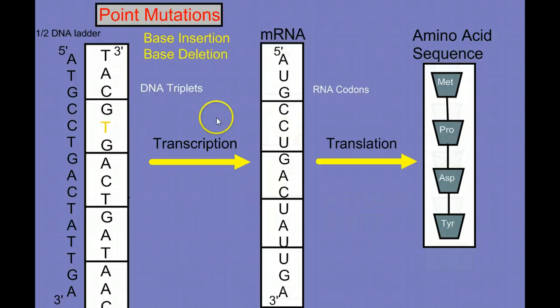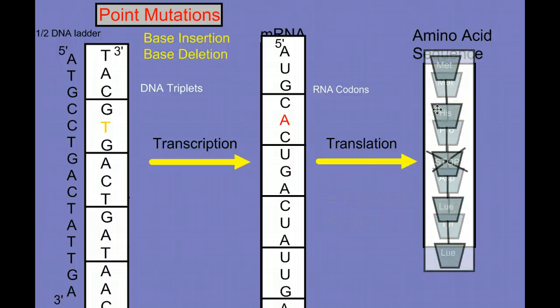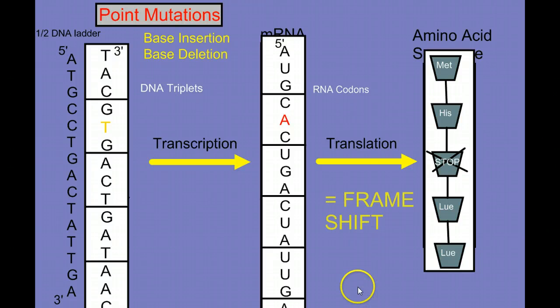When we transcribe, that's going to shift our reading frames here in the messenger RNA. And when we translate, that's going to change many of our amino acids. And I kind of messed this up because it shifted and made a stop codon here in the middle. But the point is, this leads to what we call a frame shift. By adding a letter, we shift all of our reading frames, and it's going to change all the amino acids from that insertion point forward. And if we were to look at a base deletion, we'd see the exact same thing. We'd just be shifting in a different direction. So base insertions and base deletions lead to frame shifts.